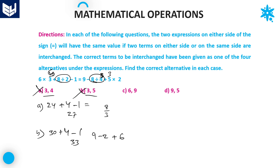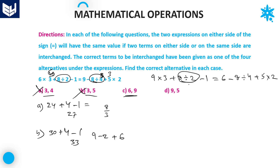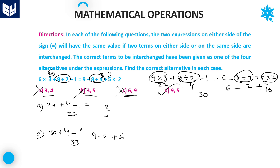Option C: 6 and 9 are interchanged. The expression becomes 9 into 3 plus 8 divided by 2 minus 1, equals 6 minus 8 divided by 4 plus 5 into 2. Left hand side: division gives 4, and multiplication gives 27. 27 plus 4 is 31, minus 1 is 30. Right hand side: 2 plus 6 minus here it is 10. Option C is also incorrect.